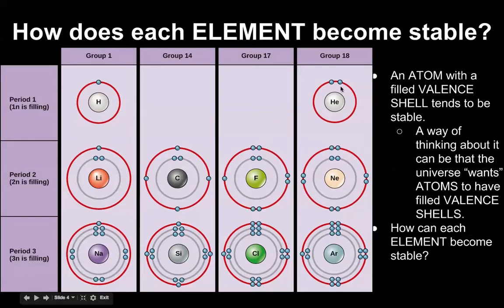Group 18 is kind of the exception — they're already filled. That means they're not going to have a charge; they're already as stable as they can be. They just don't want any other electrons, or they don't want to get rid of any of their electrons. They're fine just the way they are.